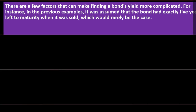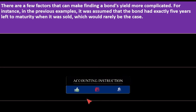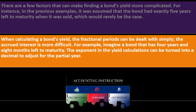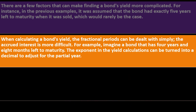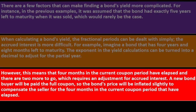Complications in finding a bond's yield: there are a few factors that can make finding a bond's yield more complicated. For instance, it was assumed the bond had exactly 5 years left to maturity, which would rarely be the case. When calculating a bond's yield, fractional periods can be dealt with simply, but accrued interest is more difficult. For example, imagine a bond with 4 years and 8 months left to maturity. The exponent in the yield calculation can be turned into a decimal to adjust for the partial year, but an adjustment for accrued interest is also required.